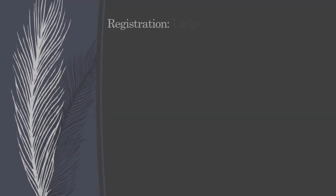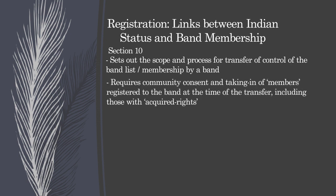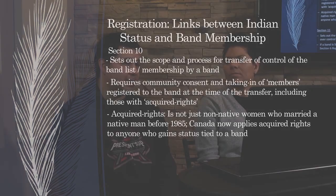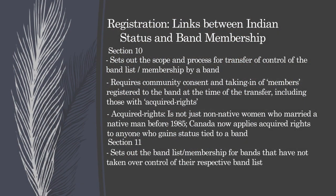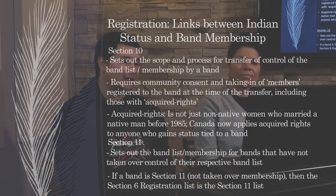Let's look at the links between Indian status and band membership. Section 10 sets out the scope and process for transfer of control of the band list or membership by a band. It requires community consent and taking in members registered to the band at the time of transfer, including those with acquired rights. Kahnawake is not under Section 10 — we would be classified under Section 11, which sets out the band list and membership for bands that have not taken over control of their own band lists. In Canada's eyes, their list is the actual list of Kahnawake, not ours. If a band is Section 11, then the Section 6 registration list is the Section 11 list.